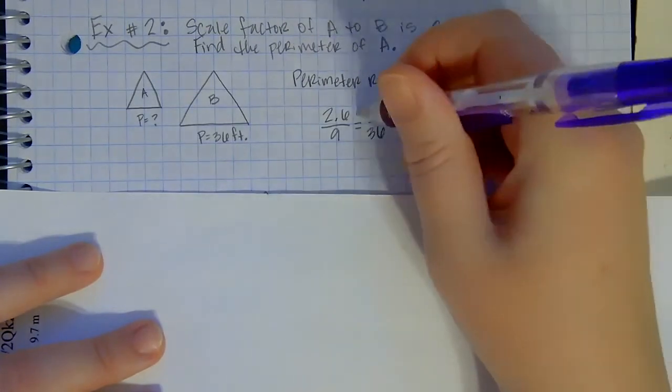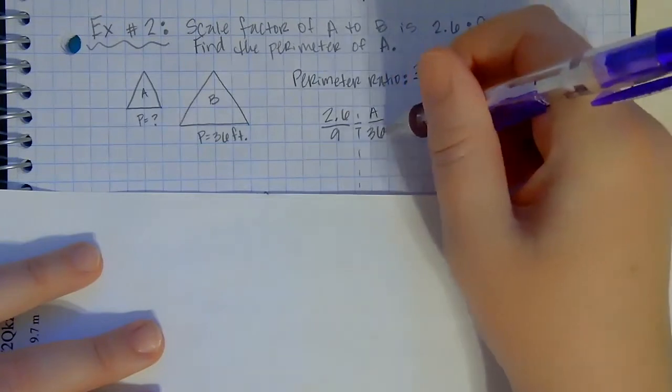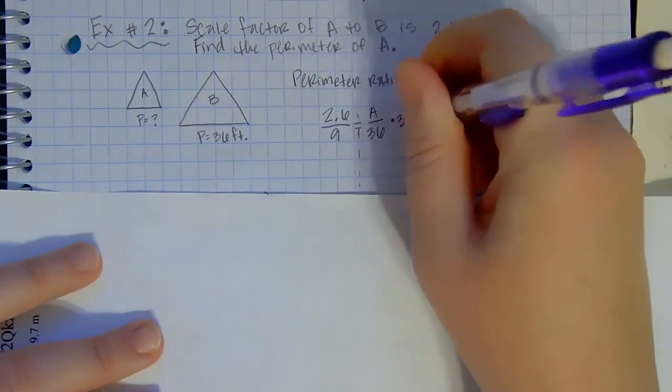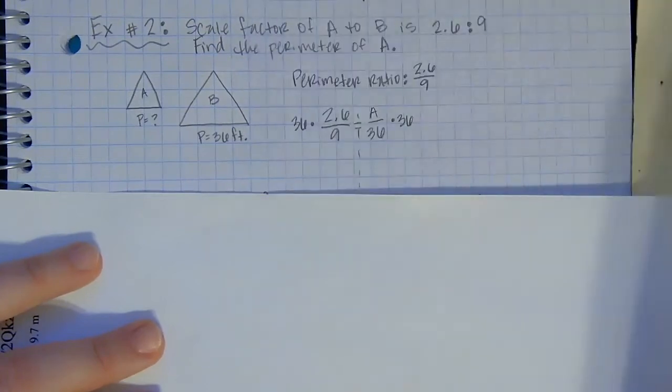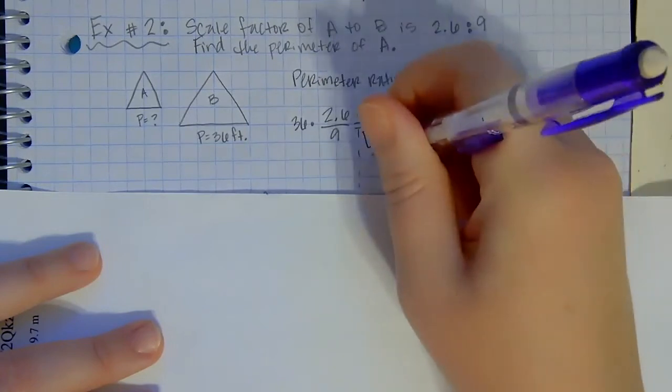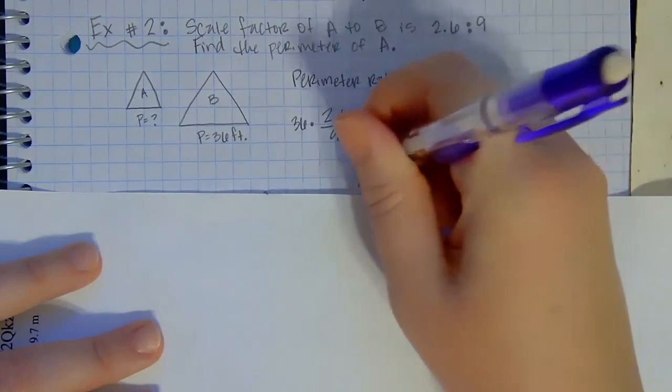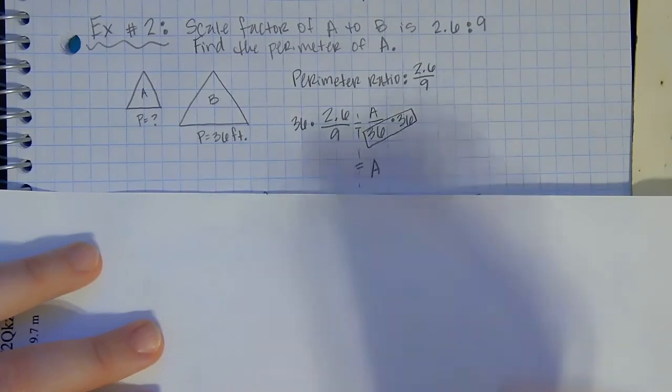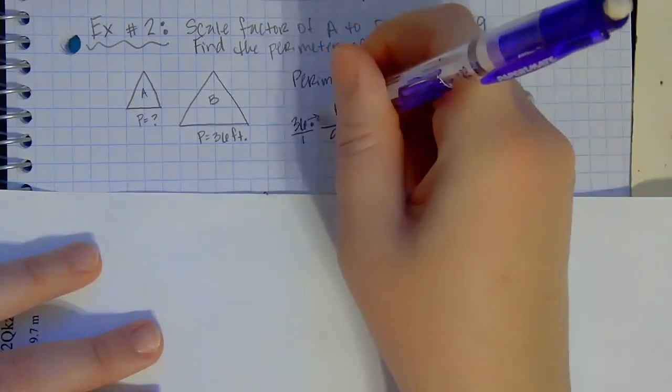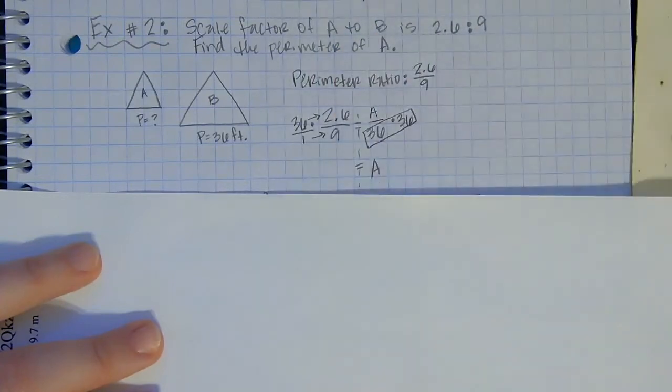We can ask ourselves on the same side as the A is the 36 and it's being divided, so the opposite would be to multiply by 36 to both sides. So 36 divided by 36 gives you 1 there, and I can bring down the A. And on this side, this is like a 36 over 1, so I just literally multiply straight across and divide.